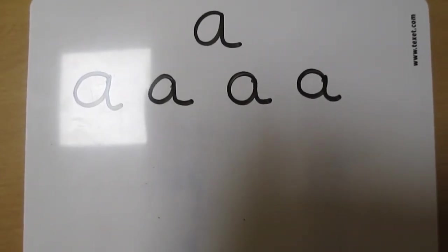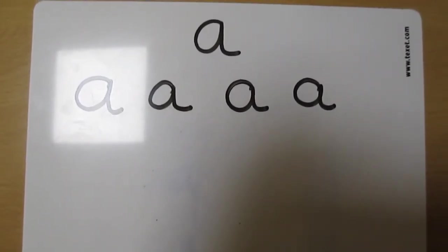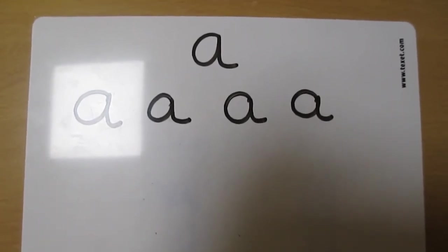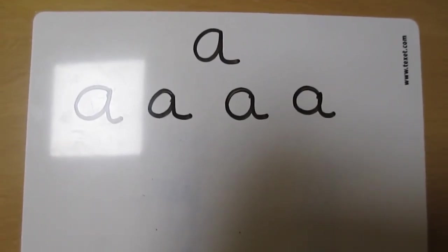Now it's your turn to practice on your boards. What I would like to see is your letter being written four times across the top of your board. Try and make sure that all of your letters are the same size and look the same. Pause the video now and off you go.